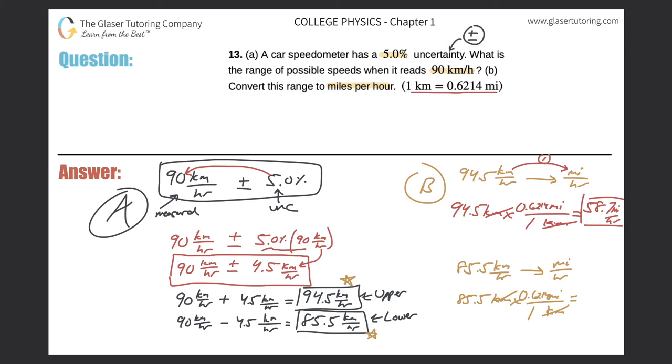So 85.5 times 0.6214, 53.1 miles per hour. And there is the lower limit now.